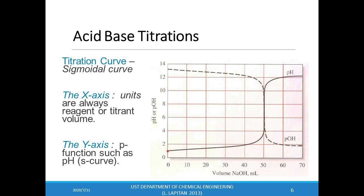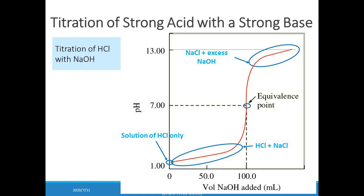In plotting an acid-base titration curve, the x-axis units are always the reagent or titrant volume, while the y-axis can be pH or pOH. A typical acid-base titration curve has a sigmoidal shape.